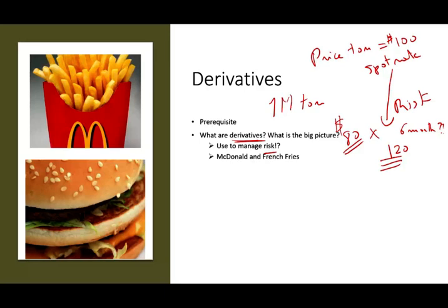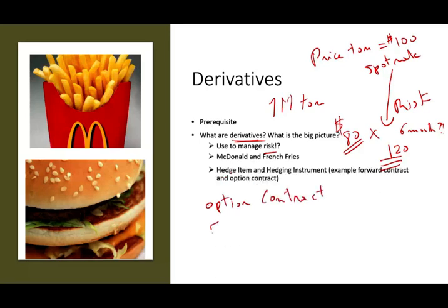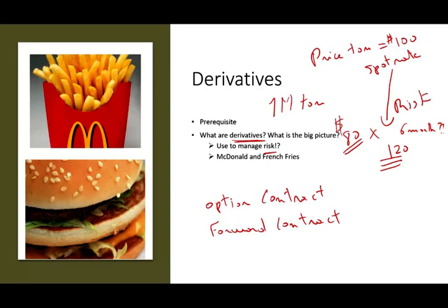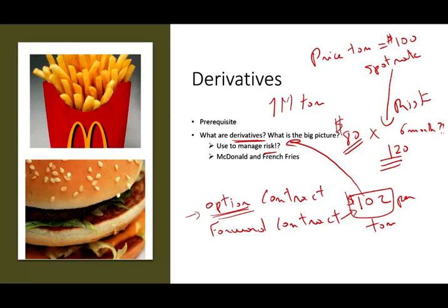So what would McDonald's do? They will either buy an option contract or a forward contract to lock the price. Maybe McDonald's is willing to pay $102 per ton. The option gives them the right, not the obligation. The forward contract would lock them at $102, and they have to buy at that price — the forward contract is more stringent. By locking in the price, they mitigate and manage the risk. This is how derivatives are used to manage risk.